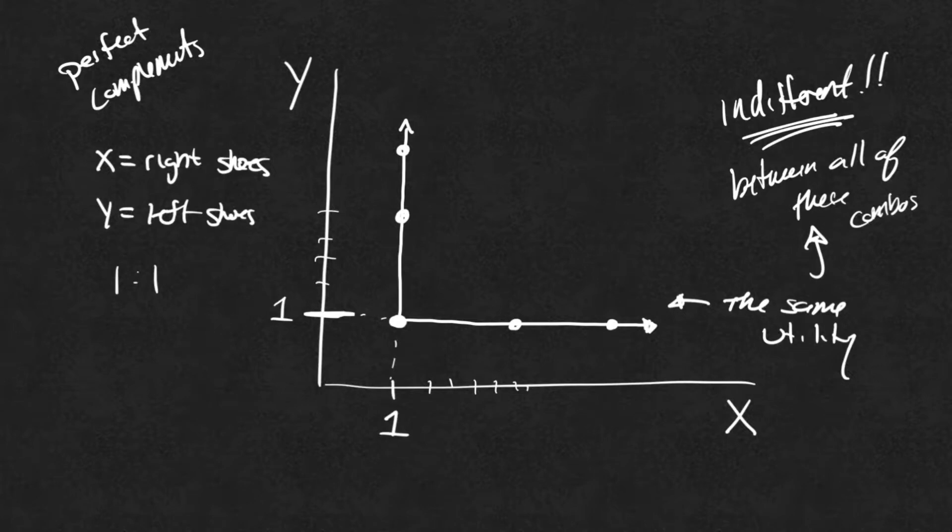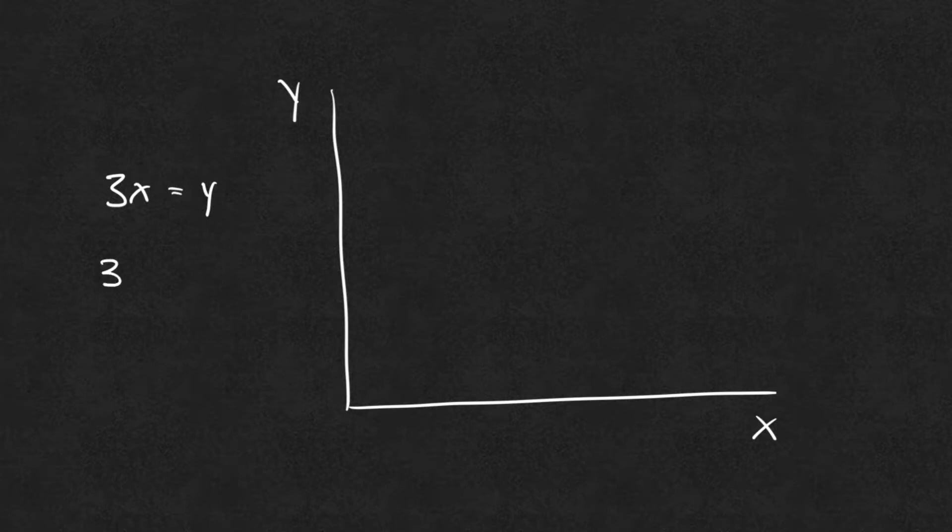What if we don't have a one-to-one? So let's do this again. If I draw out my X and my Y, and if maybe I need three X for every one Y. So I don't know, maybe I want three sugars in my one cup of coffee.